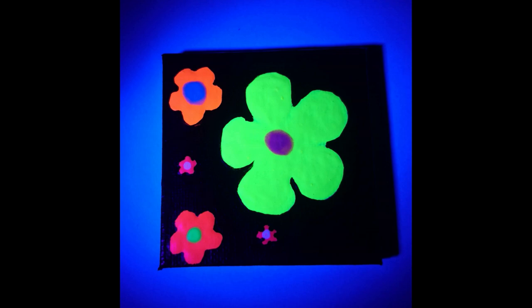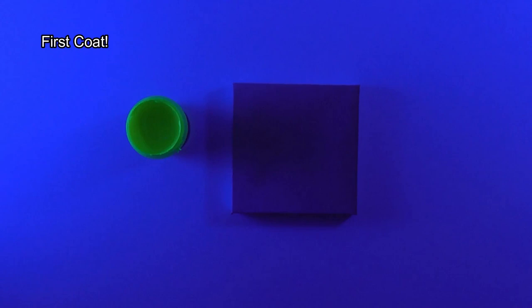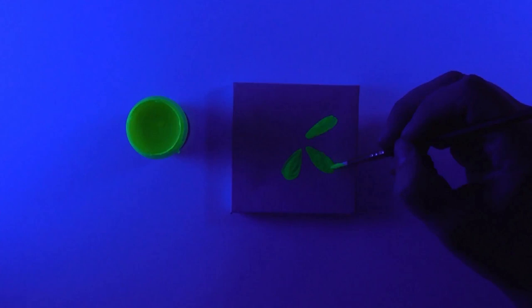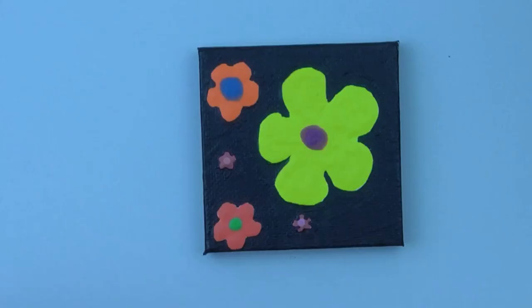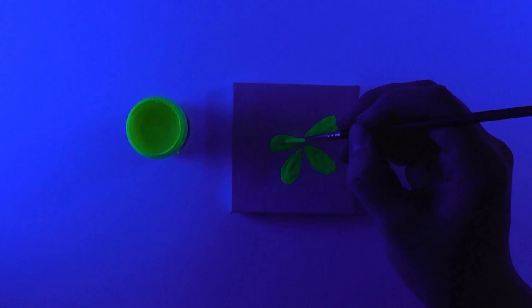Hey there, today we're gonna be making this very fancy magnetic tiny canvas blacklight and glow-in-the-dark art - some cute little hippie daisy flowers. I used Neon Nights paint. They come with eight different colors - so many colors.